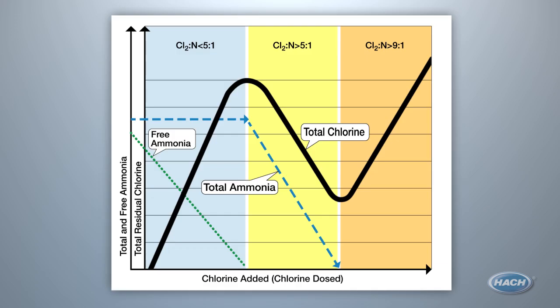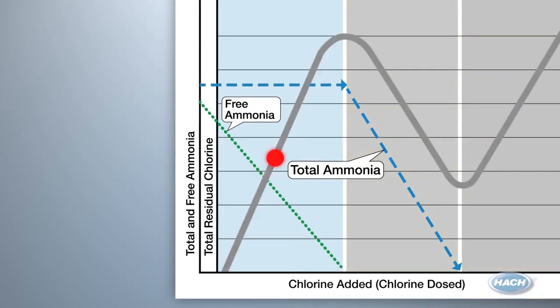So how do you know where your utility's water lies on this chart? Some simple measurements can tell you. For instance, in zone one, you will see total chlorine and a presence of free ammonia.